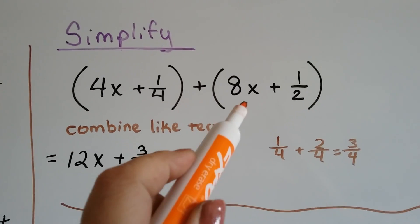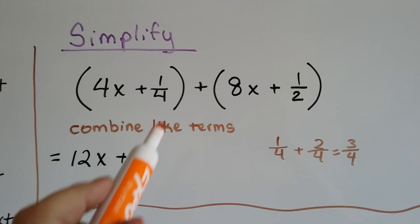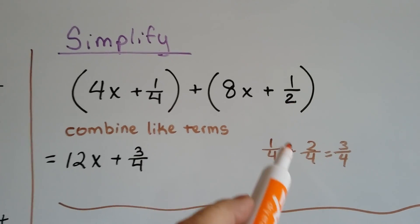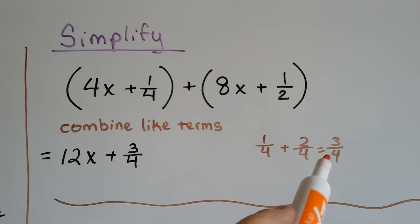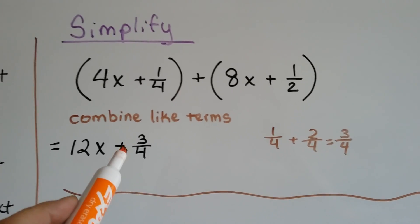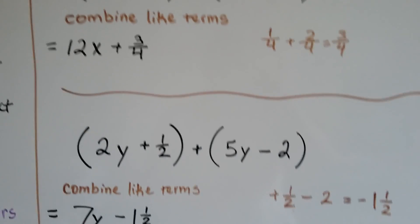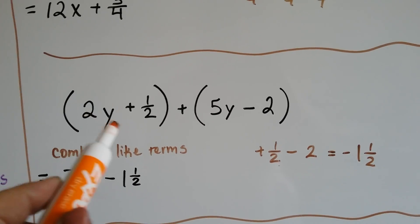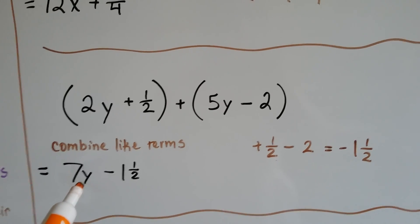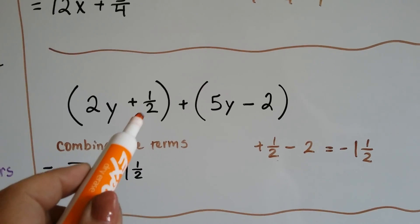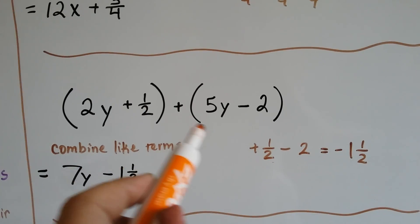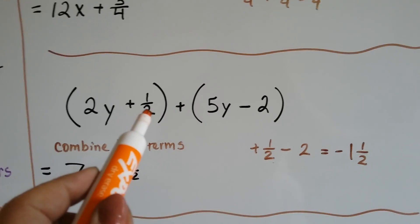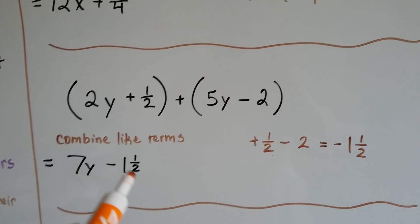If we see an expression to simplify, we combine like terms. For example, 4x and 8x give us 12x, and a positive one-fourth plus a positive one-half — that's two-fourths — so it's going to be three-fourths. We get 12x plus three-fourths. In another example, 2y plus 5y is 7y, and if we add one-half plus a negative two, that's going to put us into the negatives because one-half isn't big enough to take two away from.